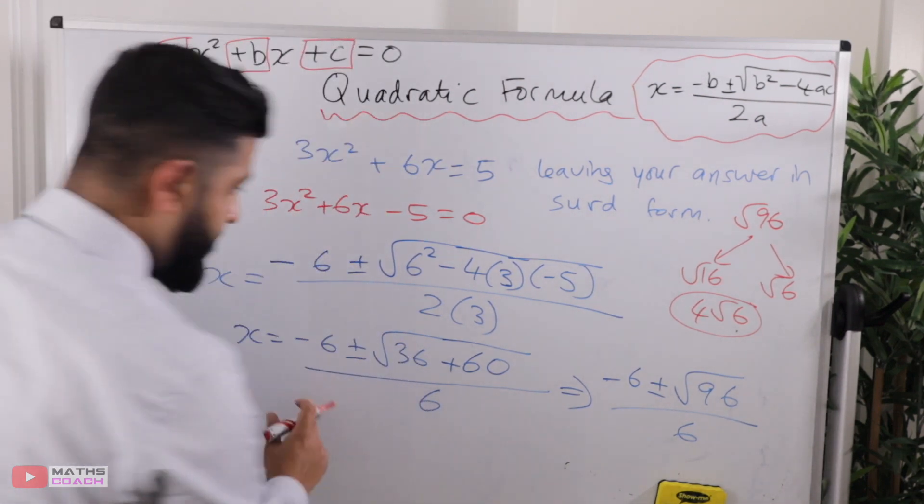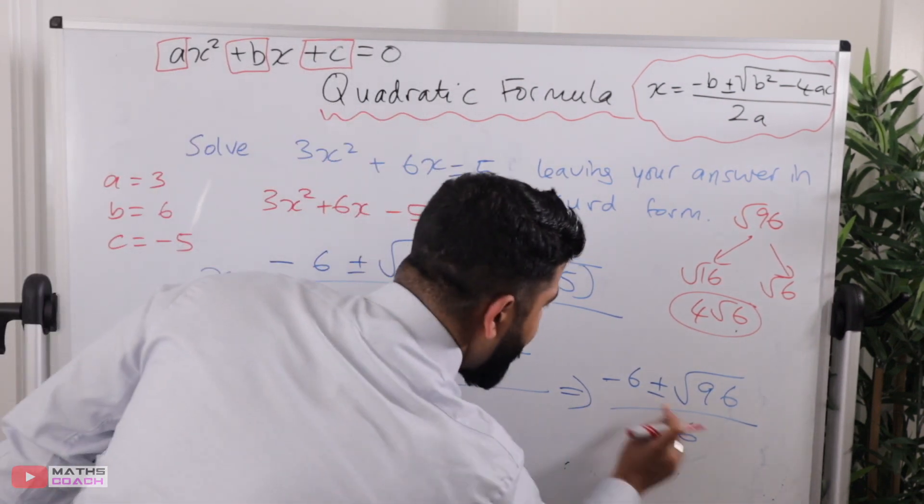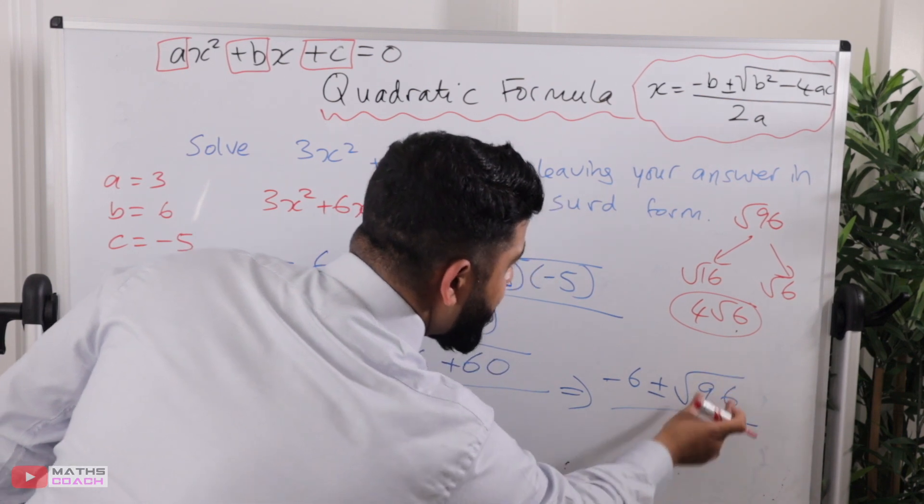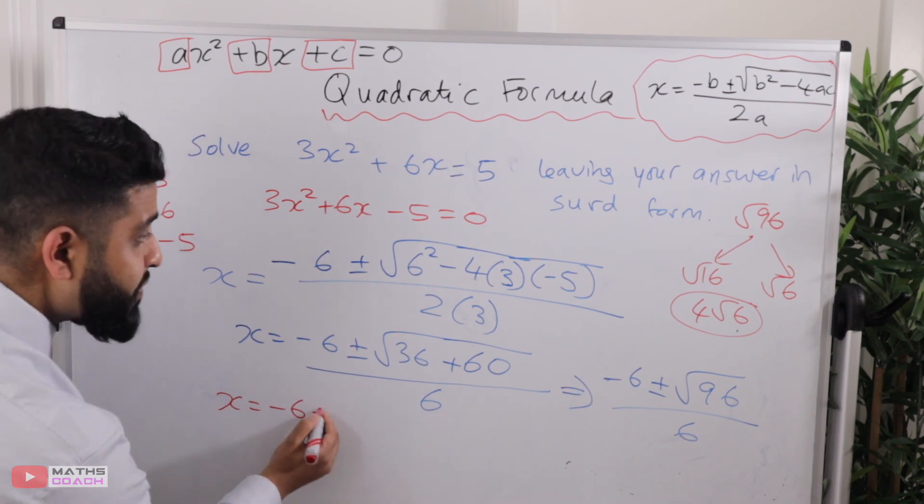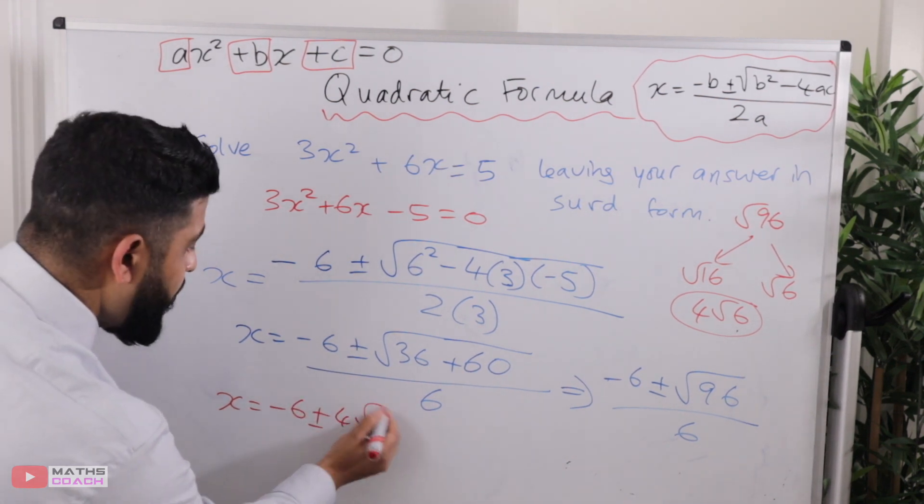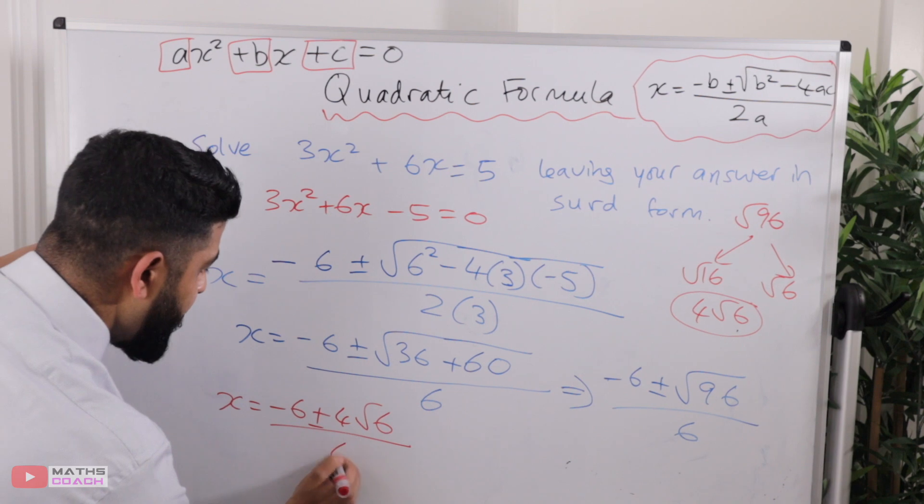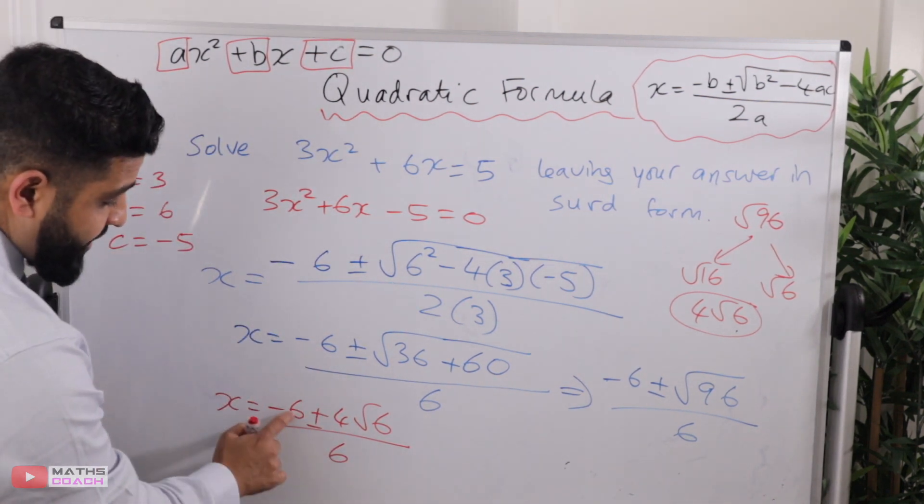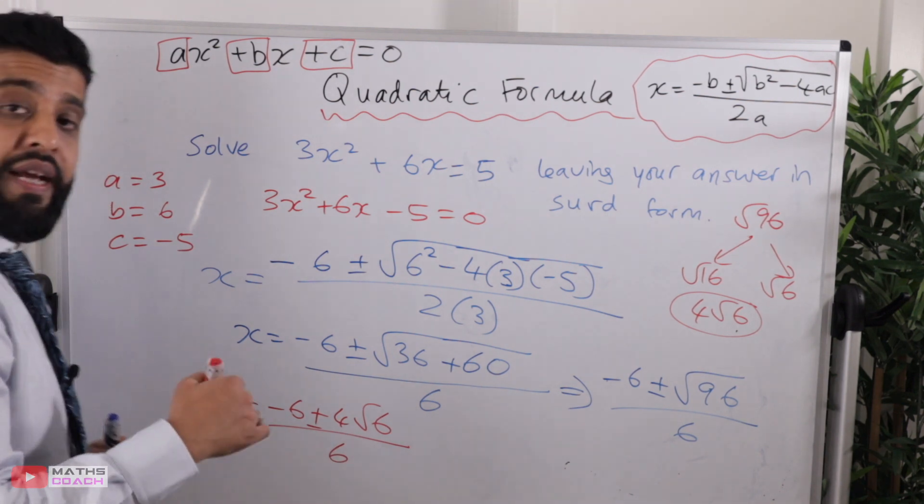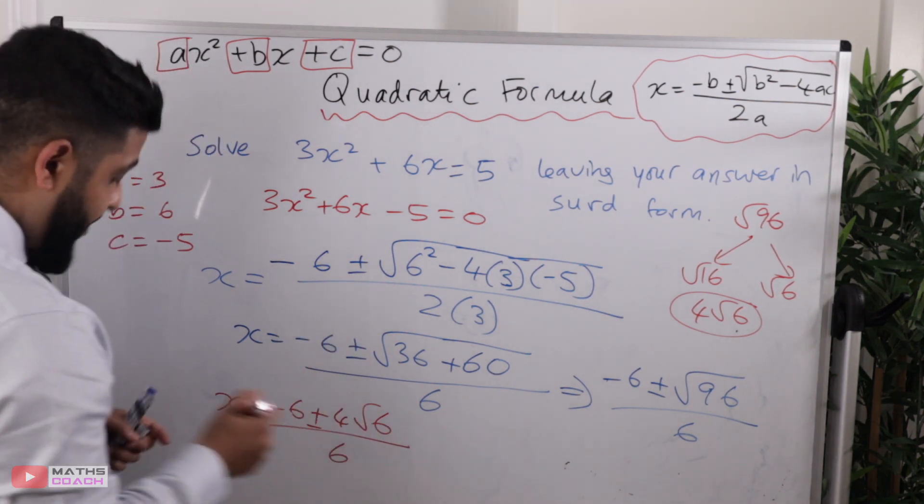We can come along back here and we can replace. Instead of root 96, we're going to write down 4 root 6. So minus 6 plus and minus 4 root 6 all over 6. Now that we've replaced it, we'll notice that 6, 6 and 4 here, they have something in common. And that is, they can all be divided by 2.